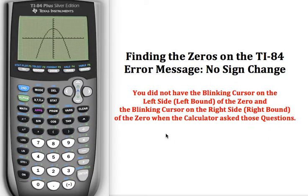Probably what that means is that you didn't have your blinking cursor on the left side or the left bound of the zero and then the right side on the right bound of that zero. When the calculator asks those questions, if you don't have it in the right spot, then it's not going to find a change in the signs. It's looking for a negative and a positive so that it can locate that zero.